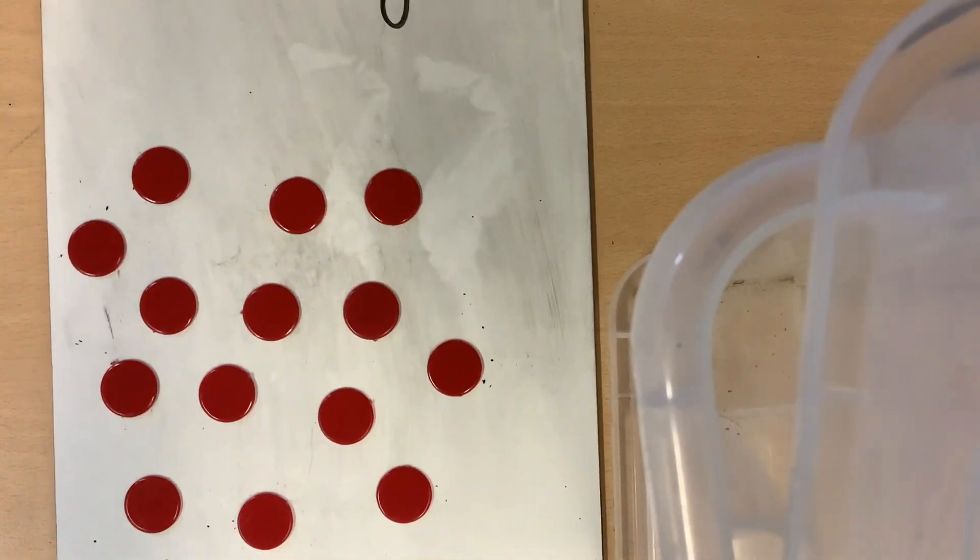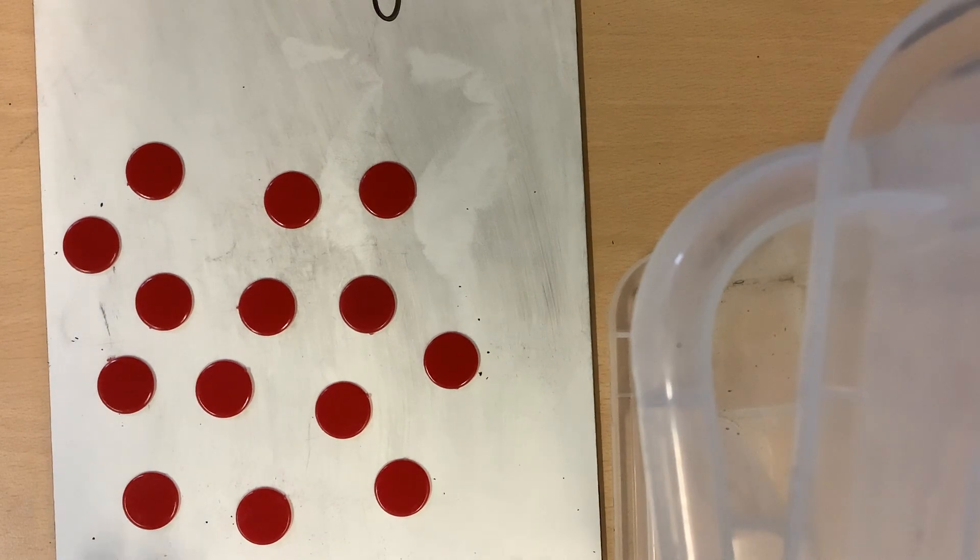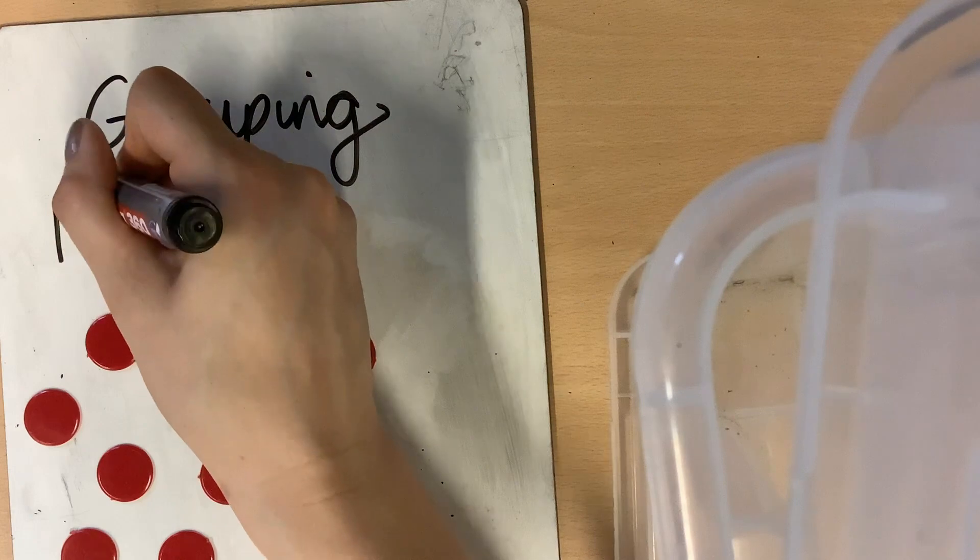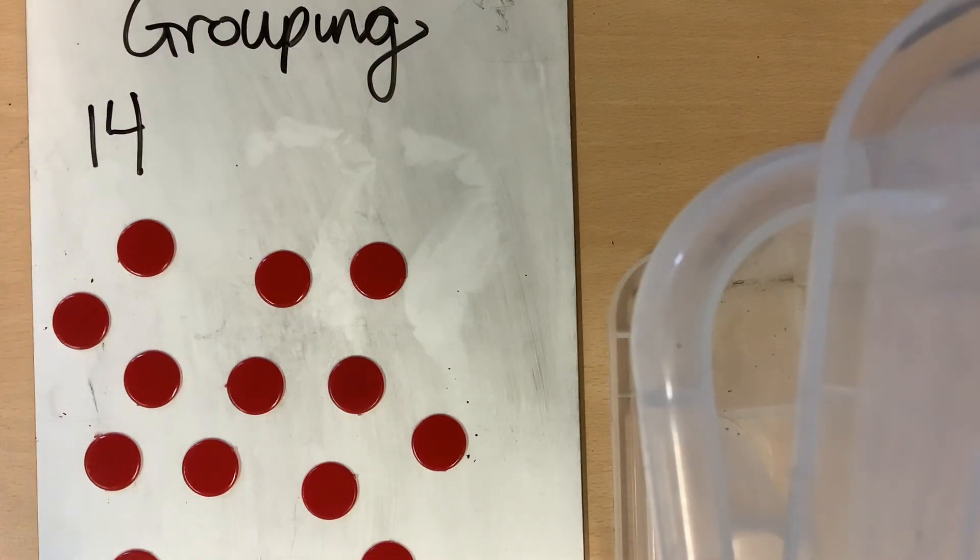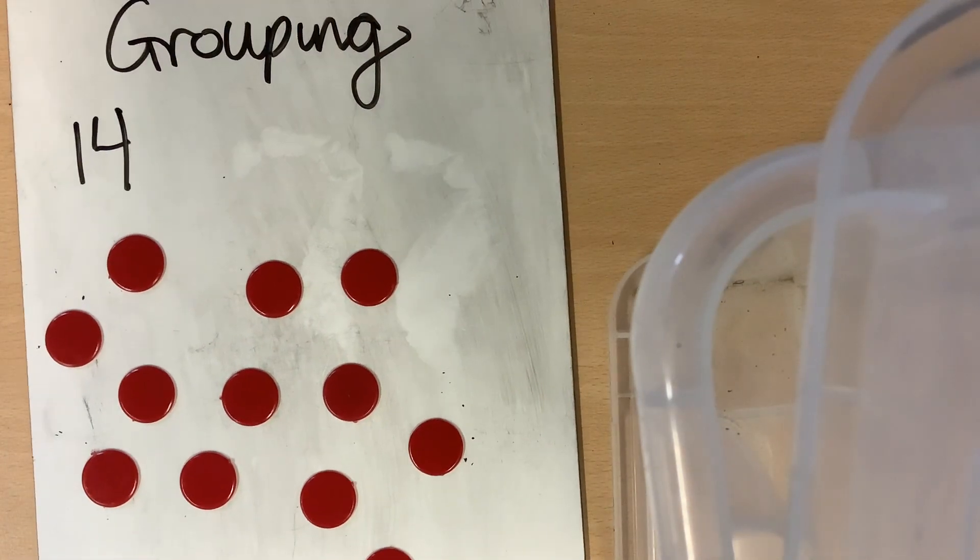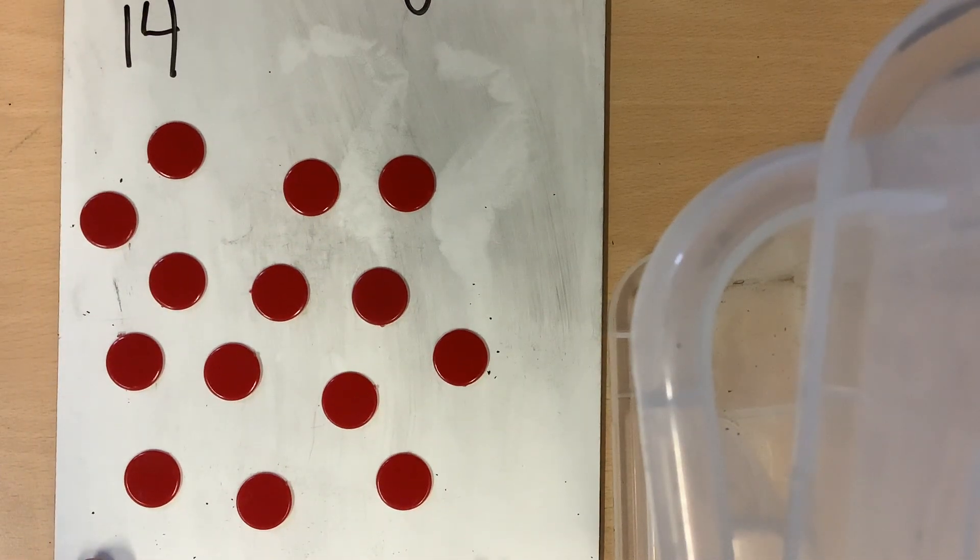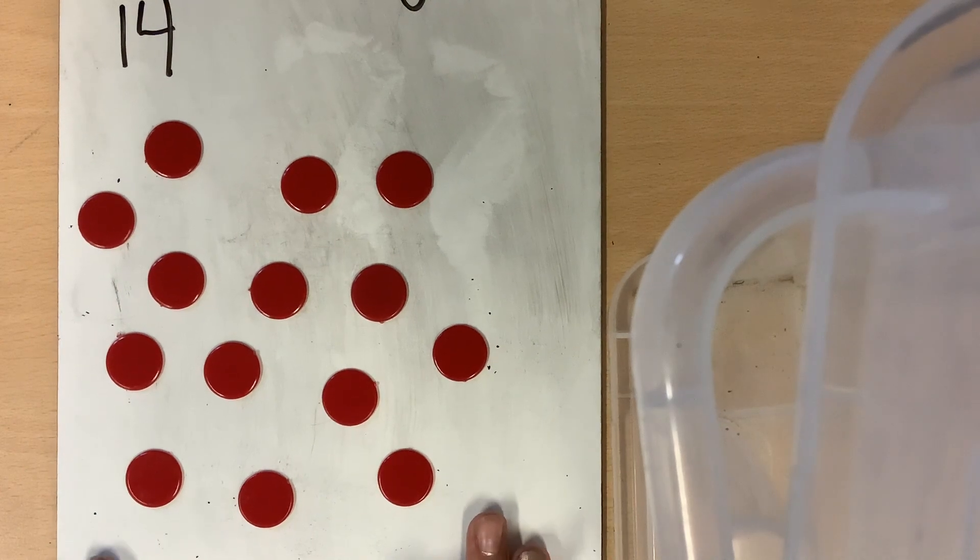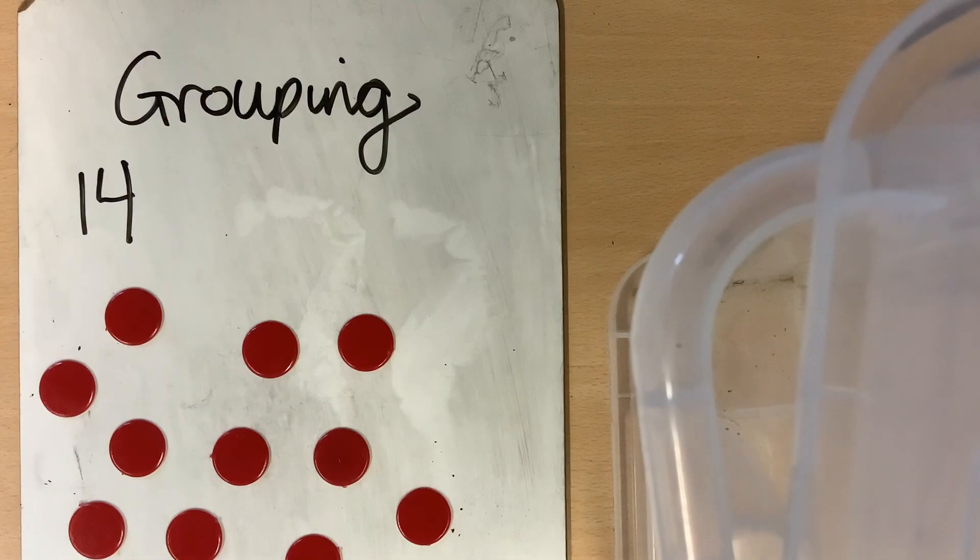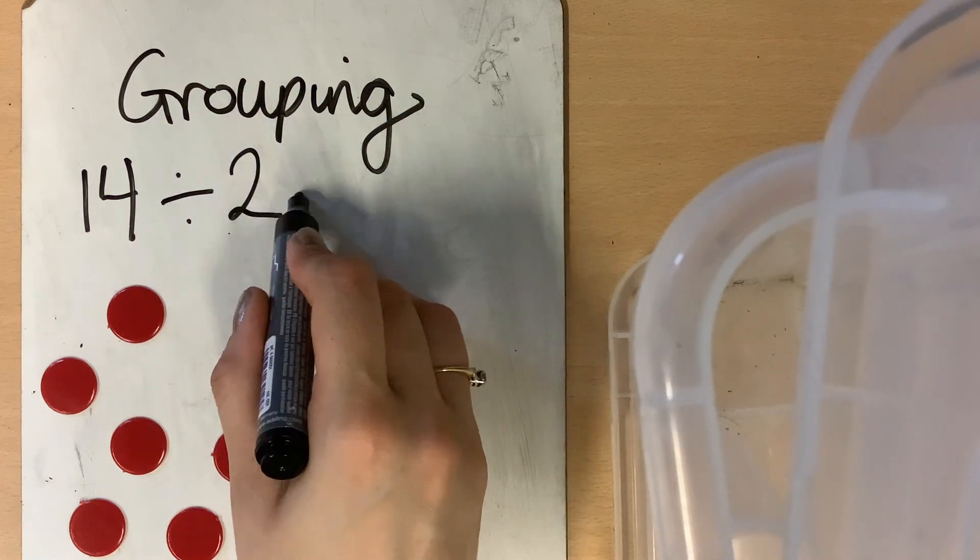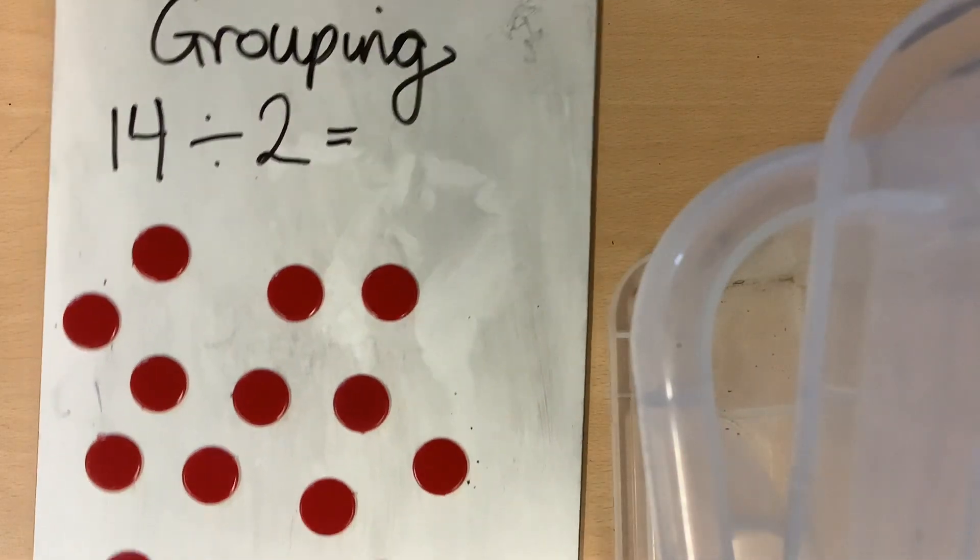I've got some counters on my board and I've got to put 14 out in total. I'm going to put them into groups of two. I'm going to imagine these are my 14 cherries and I'm going to put them into groups of two. How many groups will there be? Let's find out.